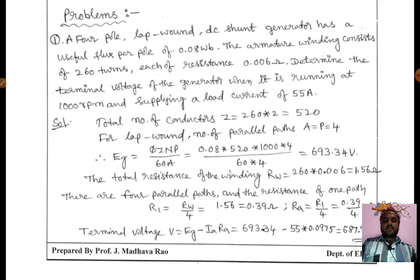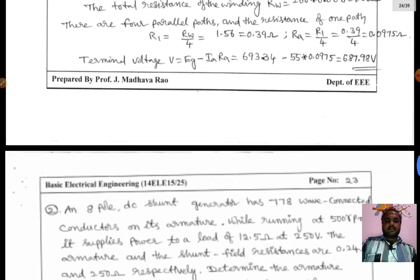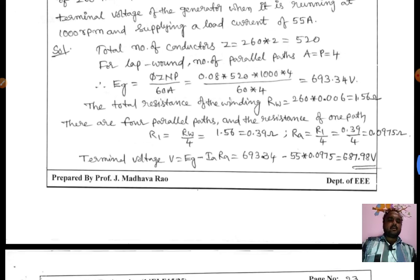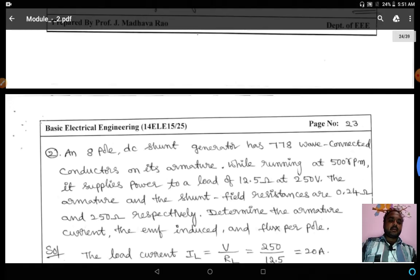Ra = Rw/4. Next, Ra = 0.39 ohms. We got the terminal voltage V = Eg - IaRa. After substituting Eg and IaRa, you will get 693.39 volts. The terminal voltage V = Eg - IaRa = 693.4 - 55 × 0.0075 = 687.98 volts.